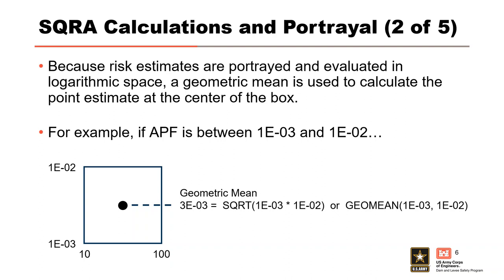Consider the following example. We are given an APF with an order of magnitude estimate ranging from 1×10⁻³ to 1×10⁻². The geometric mean can be calculated by taking the square root of the product of the values that define the range, or by using the GeoMean function in Microsoft Excel. For example, the geometric mean is 3×10⁻³, which equals the square root of 1×10⁻³ times 1×10⁻².